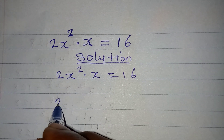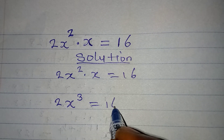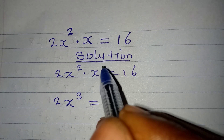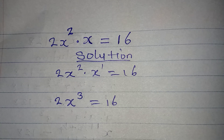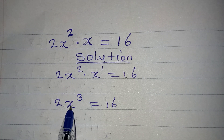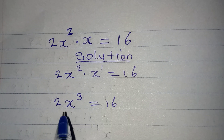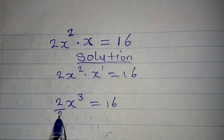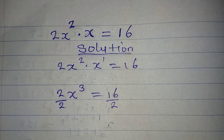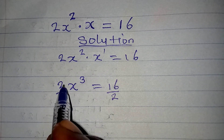This will be the same thing as 2x to the power of 3 equal to 16, because this is to the power of 1, so if you multiply the x, you pick one of the x and add the powers. Now there's nothing wrong if I divide both sides by 2.